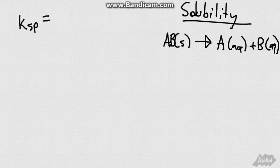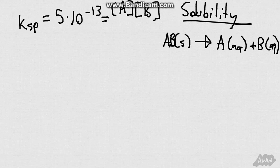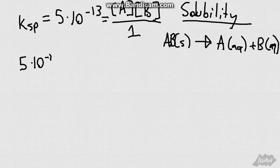So, if we know that KSP is, let's say, equal to 5 times 10 to the negative 13th, we know that then KSP has to be equal to products, which, remember, you only count the aqueous solution problems, which would be the concentration of A times the concentration of B divided by the reactants, but there are no solids, so we just leave it as 1, so essentially we get 5 times 10 to the negative 13th is equal to the concentration of A times the concentration of B.